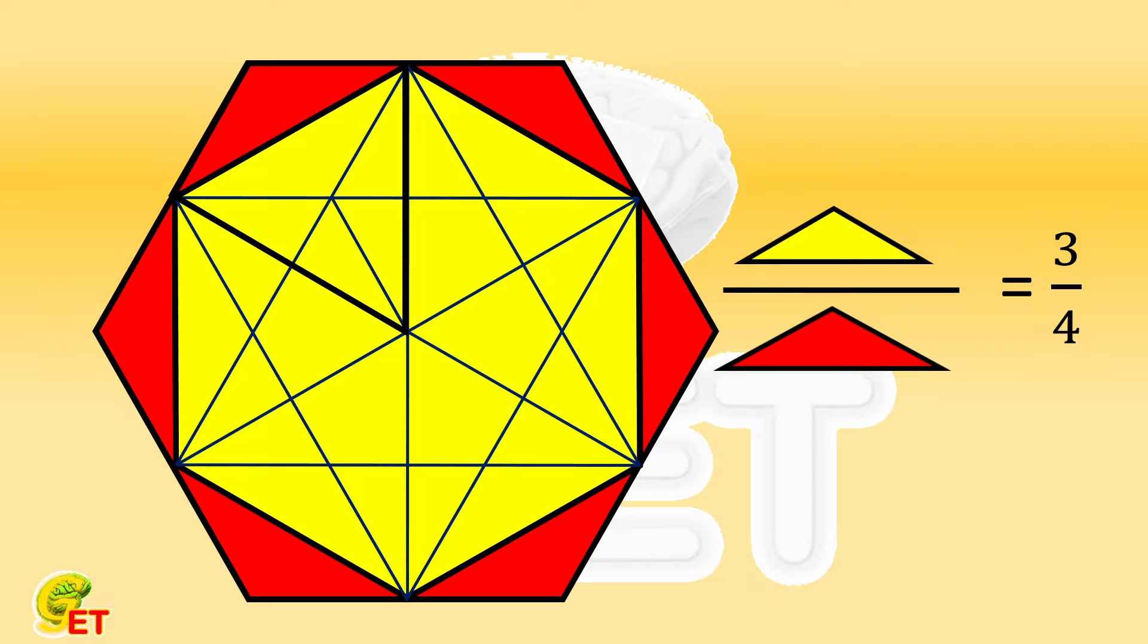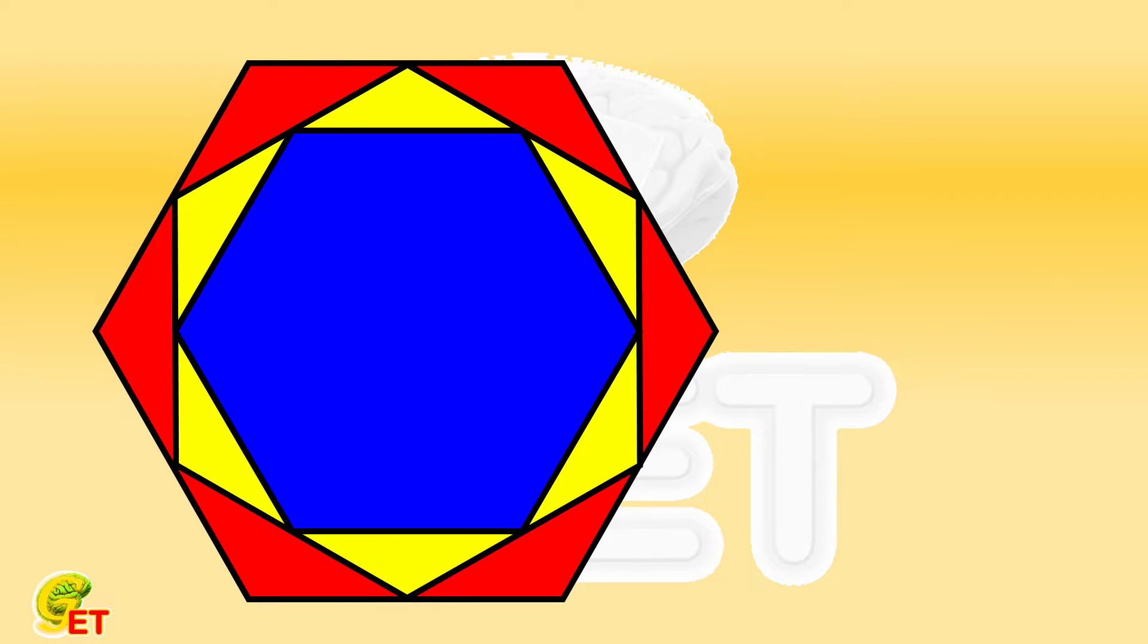To do this, we plot the blue regular hexagon again, and then label the red triangle with the letters A, B, and C. Label the yellow one with D and D. Then let's connect B and D. Obviously, our purpose is to first prove that triangle ABC is similar to triangle EAD, and then calculate their similarity ratio.